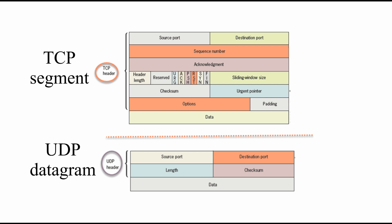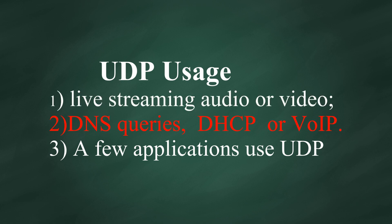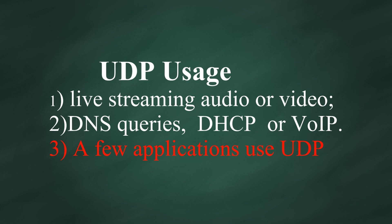At this point, you might ask: is there anything good about UDP? Yes — UDP is faster and more efficient than TCP. UDP is useful for live streaming audio or streaming video. When we watch movies online, we care about reliability, but we do not want delay. UDP is also good for multicast and broadcast, such as DNS queries or DHCP broadcasts, or Voice over IP. But only a few applications use UDP.